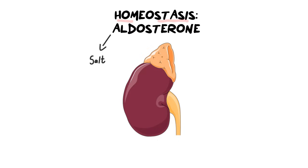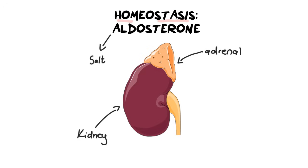Where is this homeostatic process taking place? It occurs in two locations. The first is the kidney, and specifically inside the kidney we are looking at the nephron and how it plays a role in detecting changes in salt. The second location is the adrenal gland, which is responsible for producing and secreting aldosterone, then sending that hormone to the kidney's nephrons to control the amount of salt in the bloodstream.